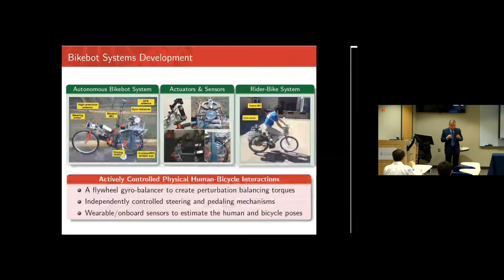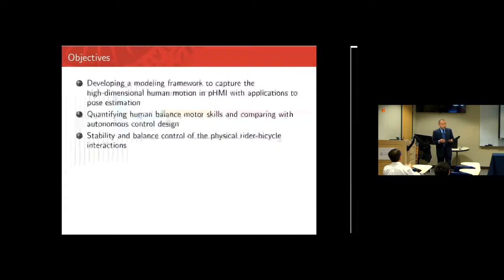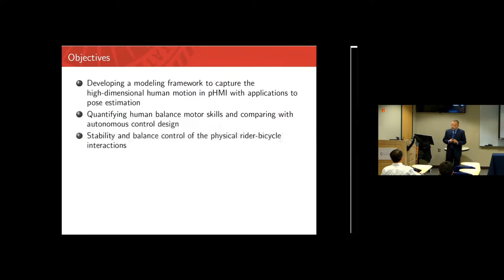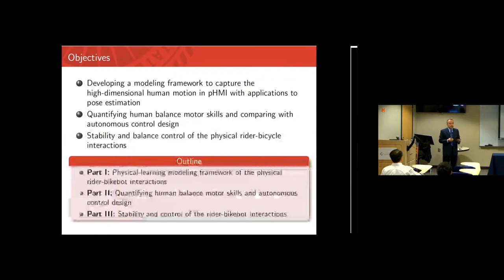The objectives for our study are: first, the human is a high-dimensional redundant system — how do we do the modeling? Second, we want quantification — defining a metric to distinguish good riders from bad riders. Third, we want to analyze the system, particularly stability. Today my talk focuses on these three aspects of the interactions.